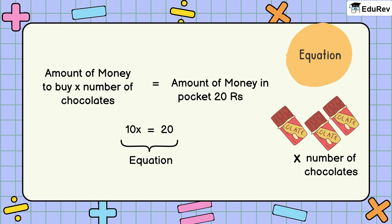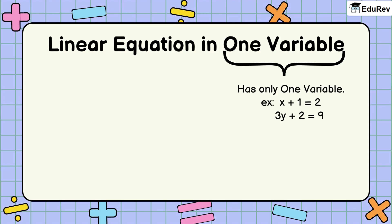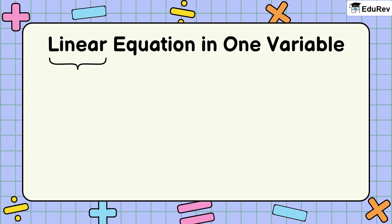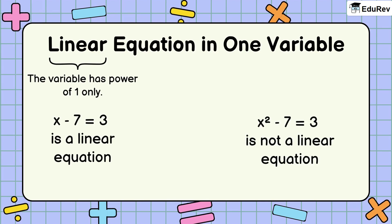Now, let's come to the name of the chapter. What is a linear equation in one variable? A linear equation in one variable is a special type of equation that has the following features. As the name suggests, it has only one single variable, usually denoted by X, Y, or Z. What does linear mean? It means that the variable has a power of 1, which means it is not raised to any other exponent like 2, 3, etc. For example, X minus 7 is equal to 3 is a linear equation, but X squared minus 7 is equal to 3 is not a linear equation, because here X is raised to the power of 2.